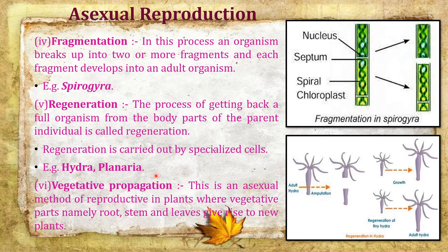Next is vegetative propagation, a very important asexual method of reproduction in plants where the vegetative parts — mainly root, stem, and leaves — give rise to a new plant.